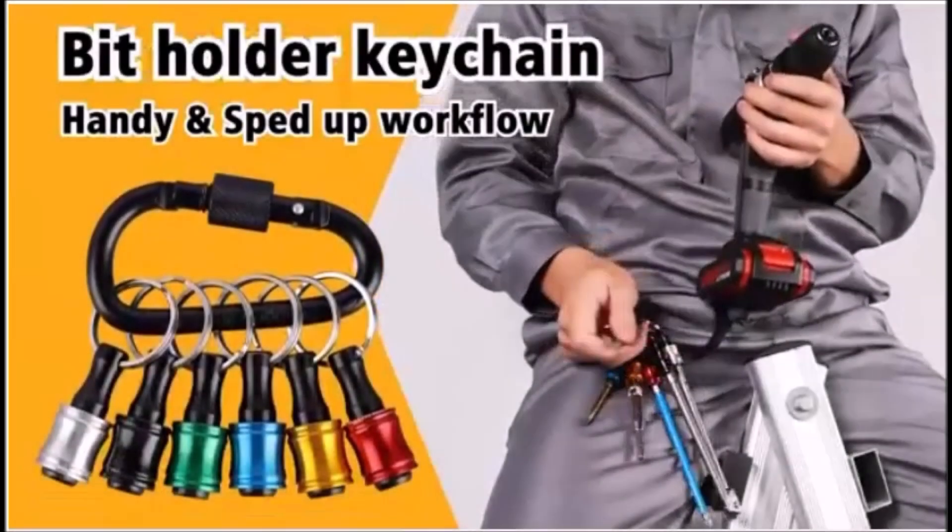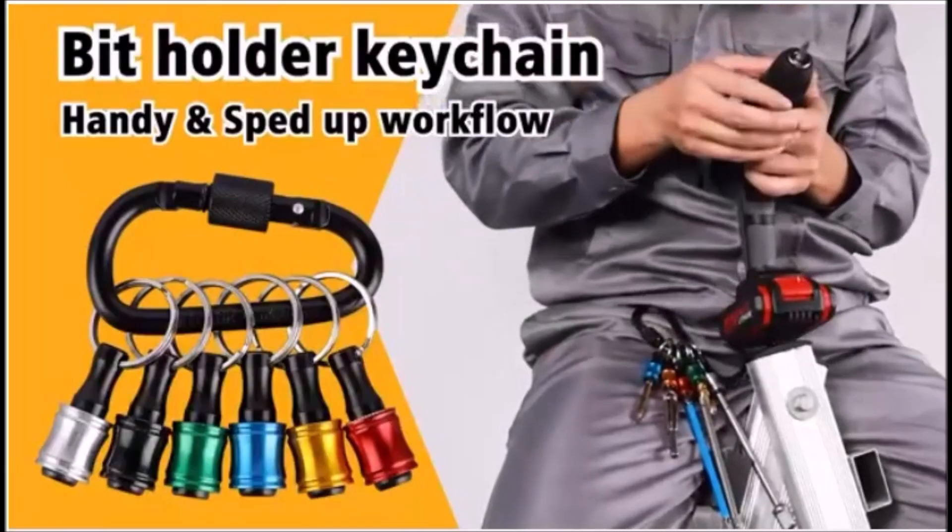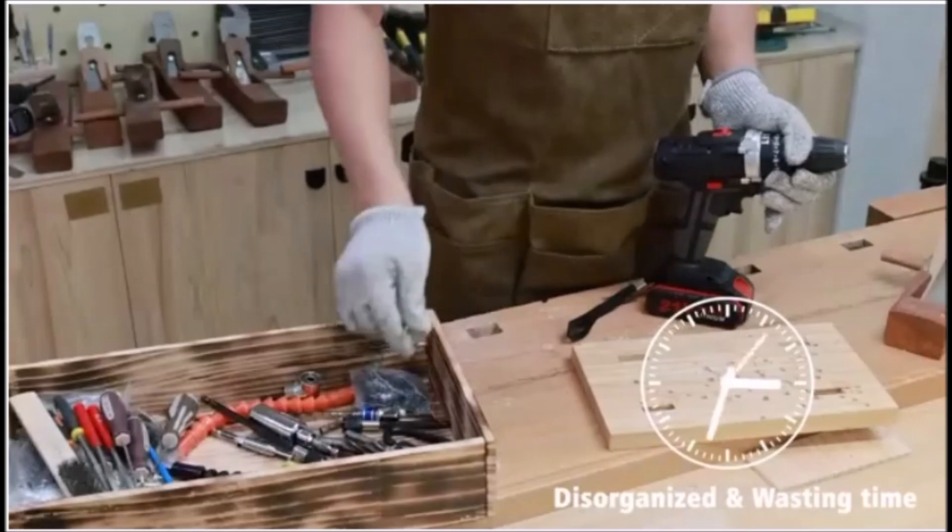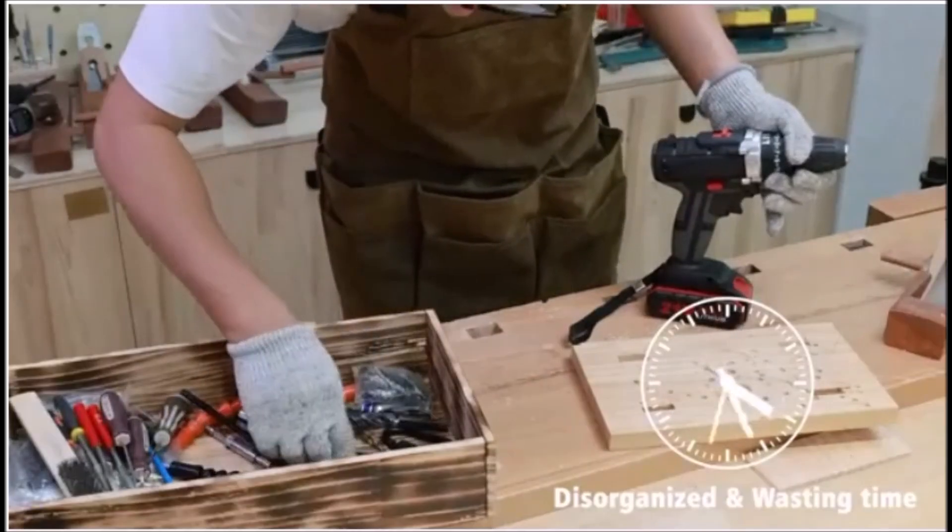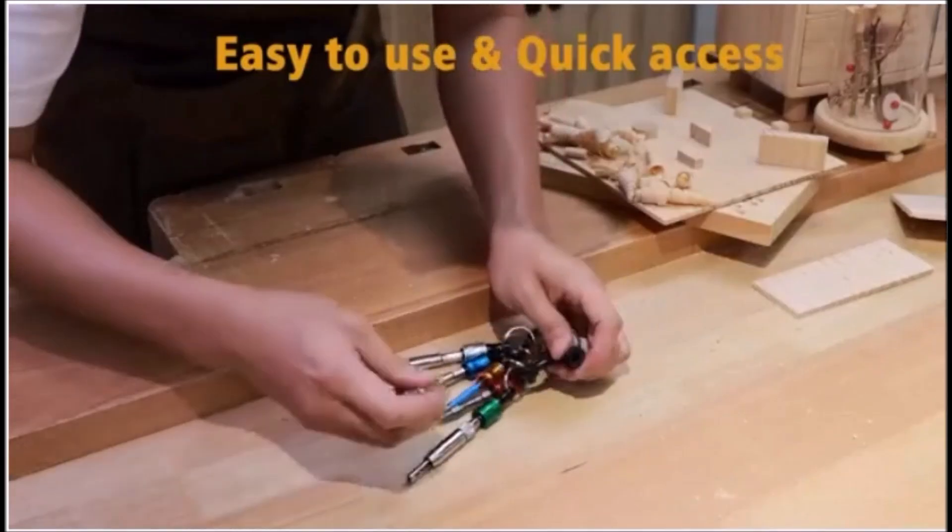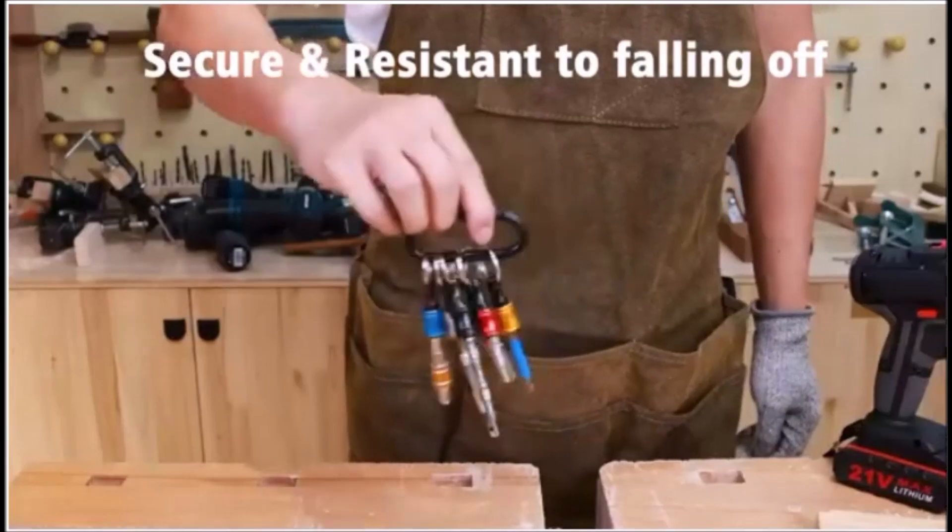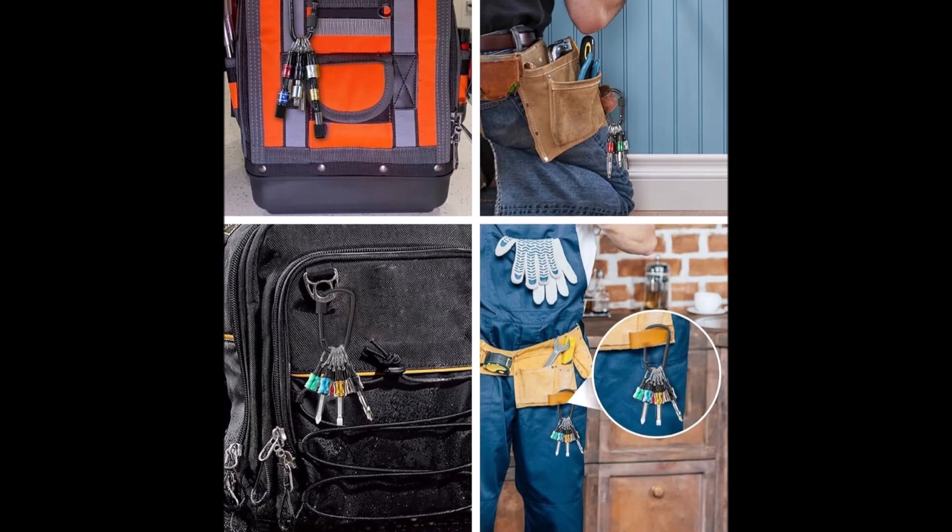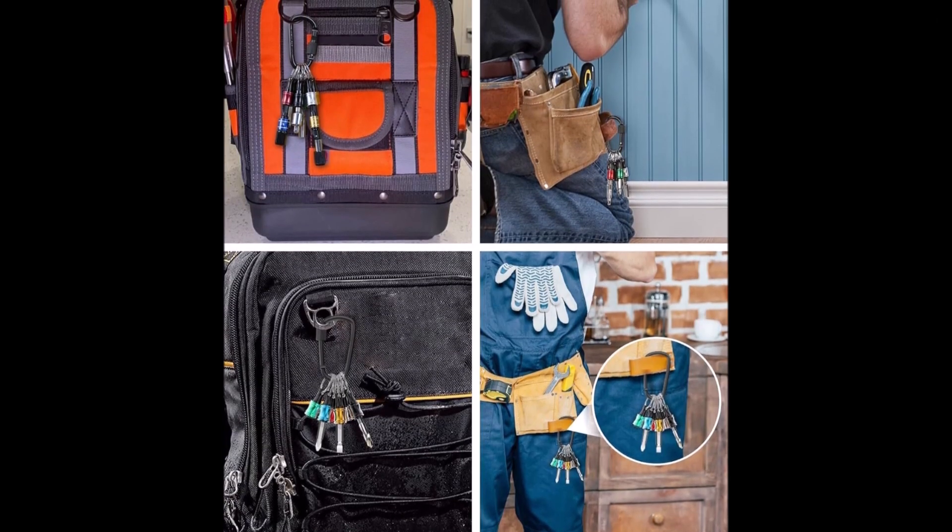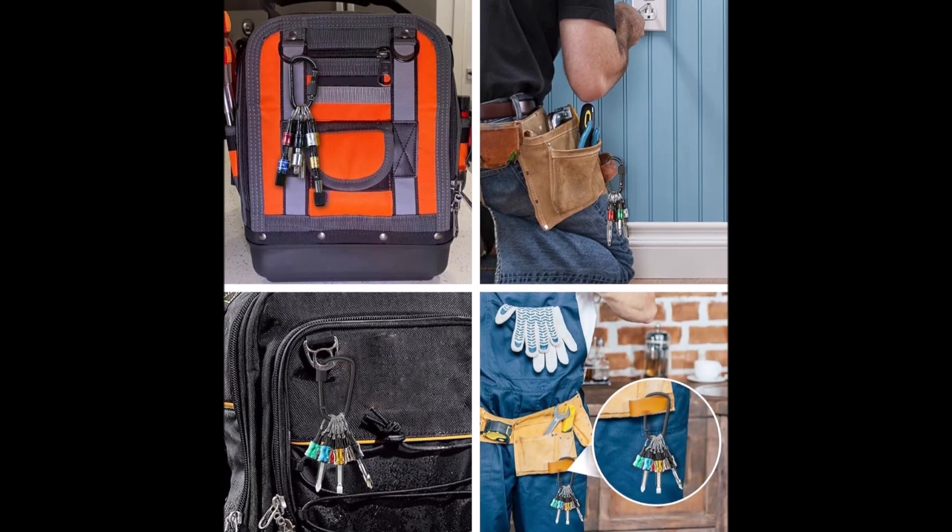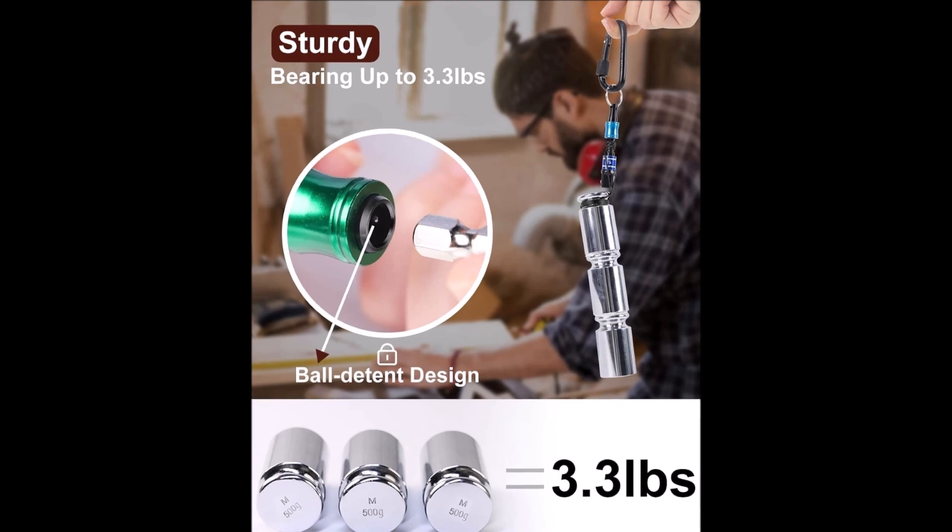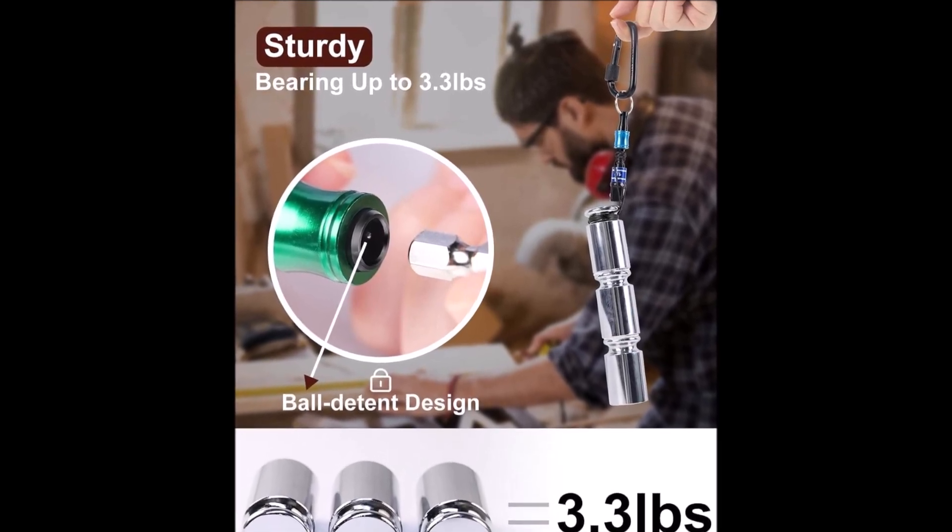Number four. The Katerka quarter inch hex shank bit holder set offers a smart way to organize and secure drill bits during fast-paced tasks. Each holder features a backup nut and steel ball locking system that keeps bits firmly in place, even under heavy use. The lightweight aluminum alloy construction makes it easy to carry without adding bulk, while the compact design fits comfortably on a keychain or tool belt. Its compatibility with most electric and handheld screwdrivers adds versatility, and the multicolor finish helps quickly identify the right bit on the job.